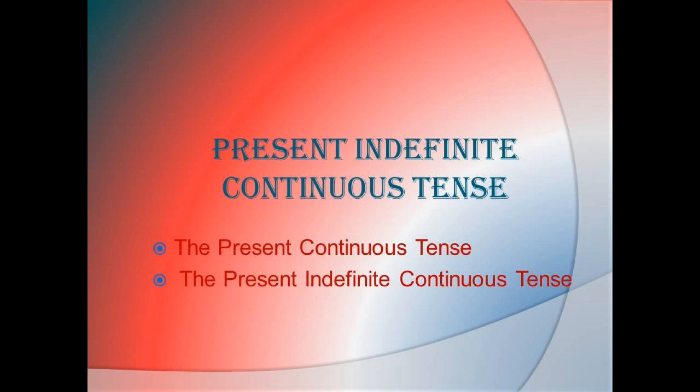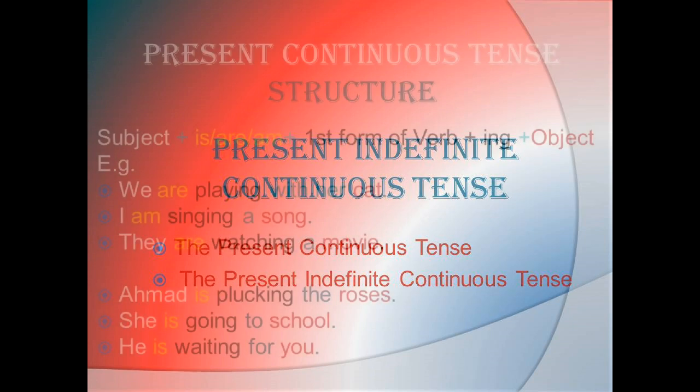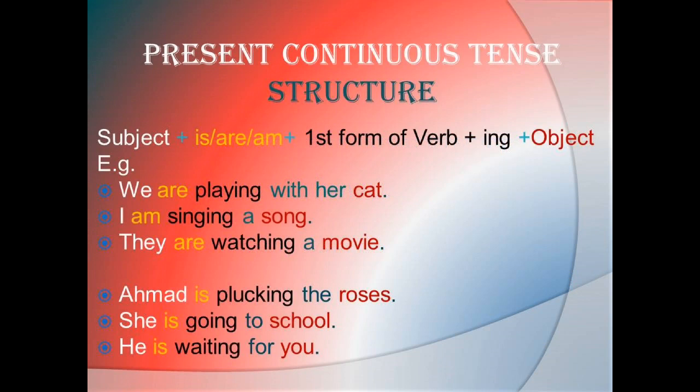The second type of present tense is present continuous tense, also known as present indefinite continuous tense. In this type of tense, continuity of the verb is used. The structure is: Subject plus is, are, or am plus first form of verb plus ing plus object. Here is, are, or am are the helping verbs, and ing should be added with the first form of verb.